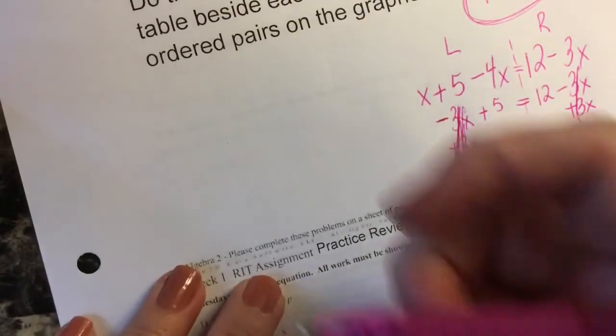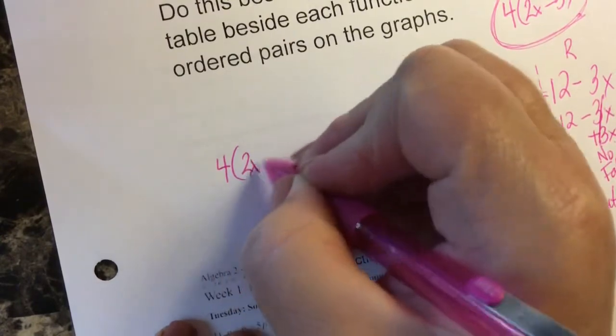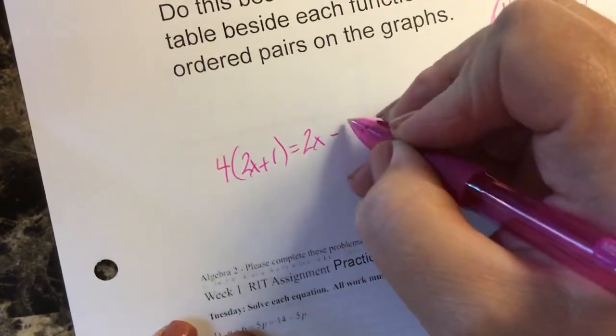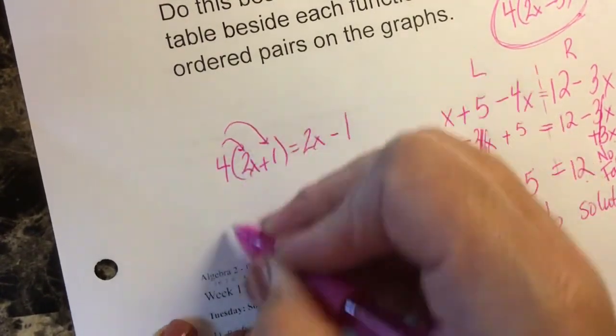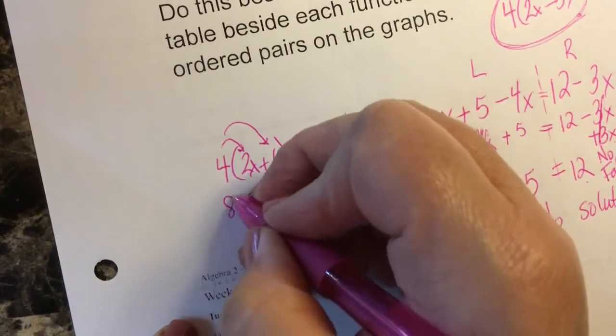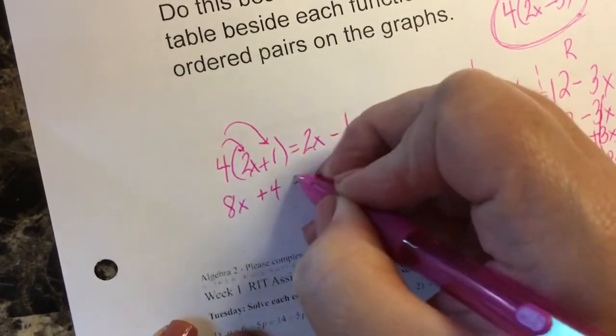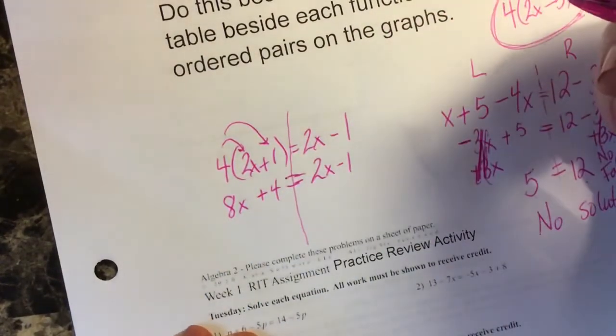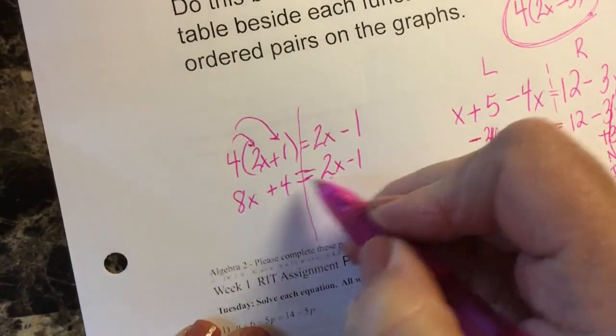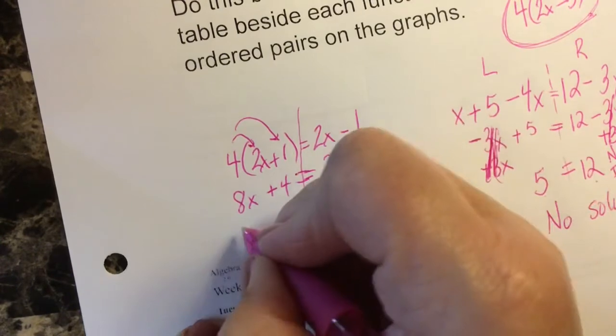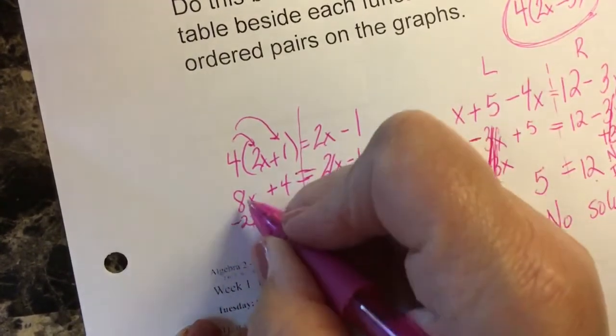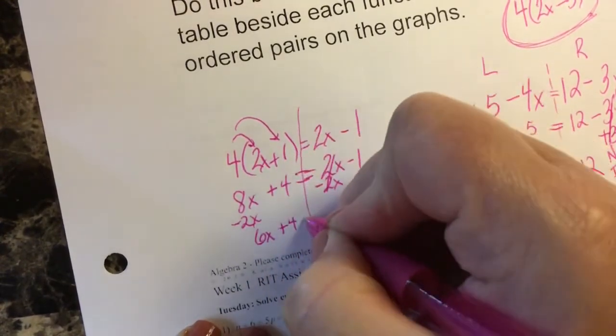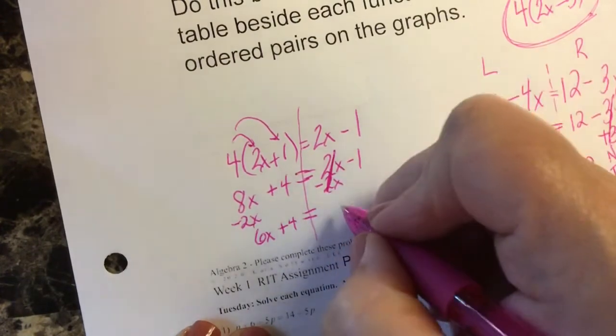Let me see if I can do a quick one for you. Distribute: 4 times 2x is 8x, 4 times 1 is positive 4. Bring the right hand side down. I'm going to move my smallest x to my largest x by the inverse operation, so I'm going to subtract. 8x minus 2x is 6x. Bring down my plus 4, bring down my equal sign lined up, and the only thing left on the right hand side is negative 1.